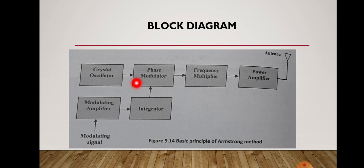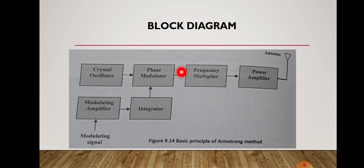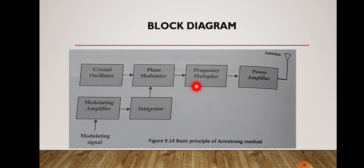So now the phase modulator has the integrated version of the modulating signal and the carrier frequency produced by the crystal oscillator. Comparing to the modulating signal, the crystal oscillator frequency will be higher. This phase modulator will produce the frequency modulated signal. But the FM signal produced here will be at a smaller frequency — it will not have transmission frequencies. That means a narrow band FM wave is produced here, so it is not good for transmission purposes. That is why we use a frequency multiplier at the output of the phase modulator.